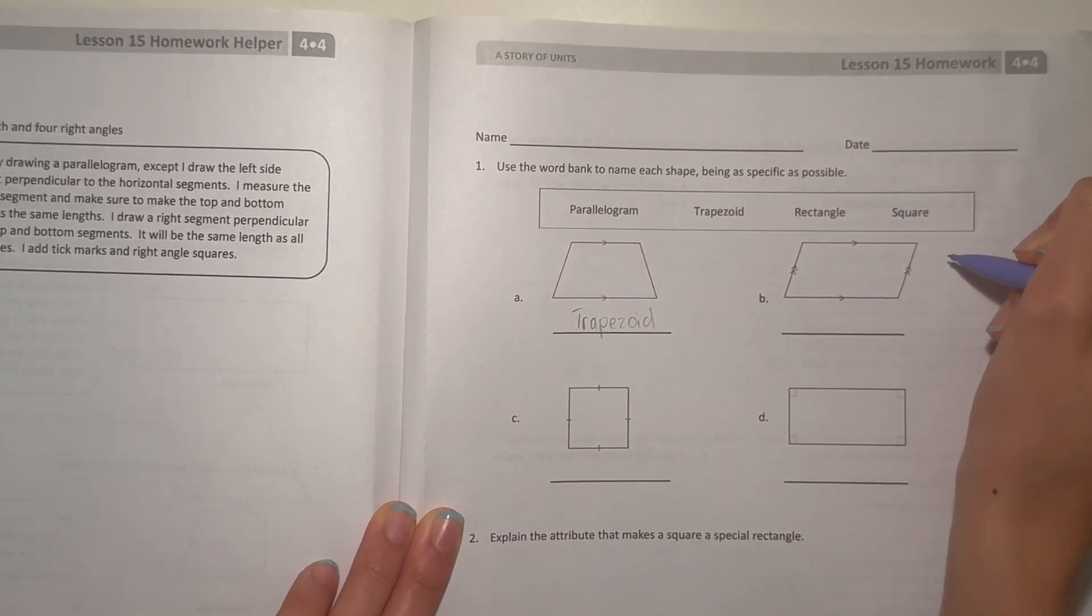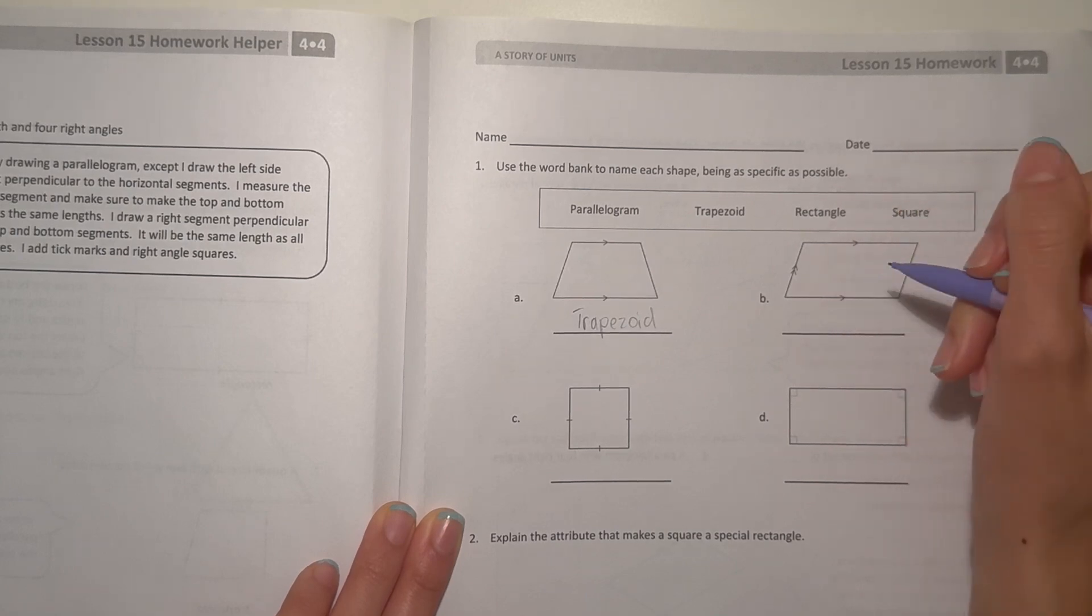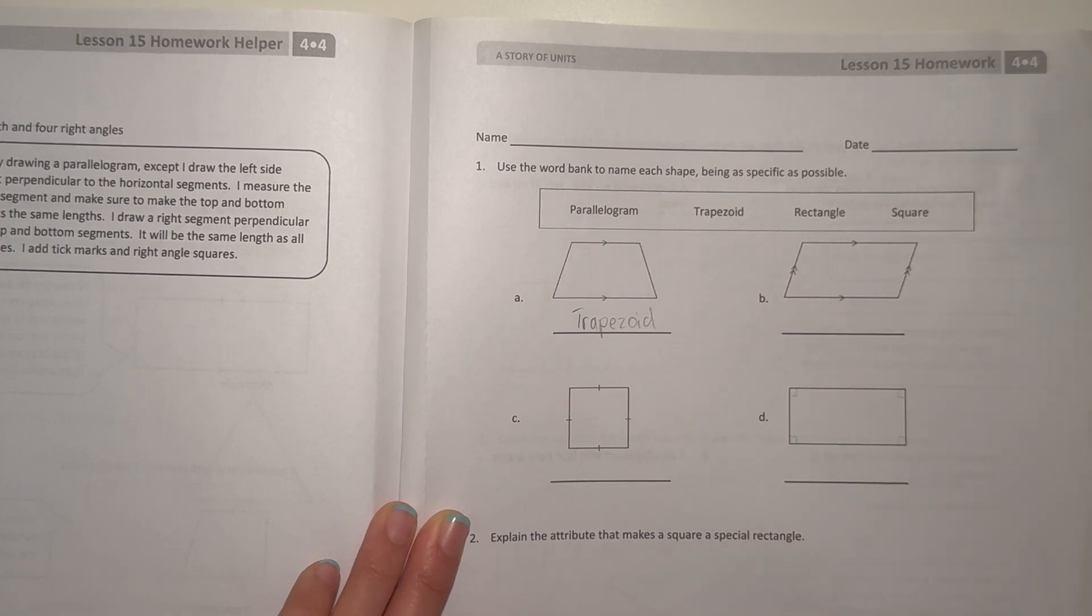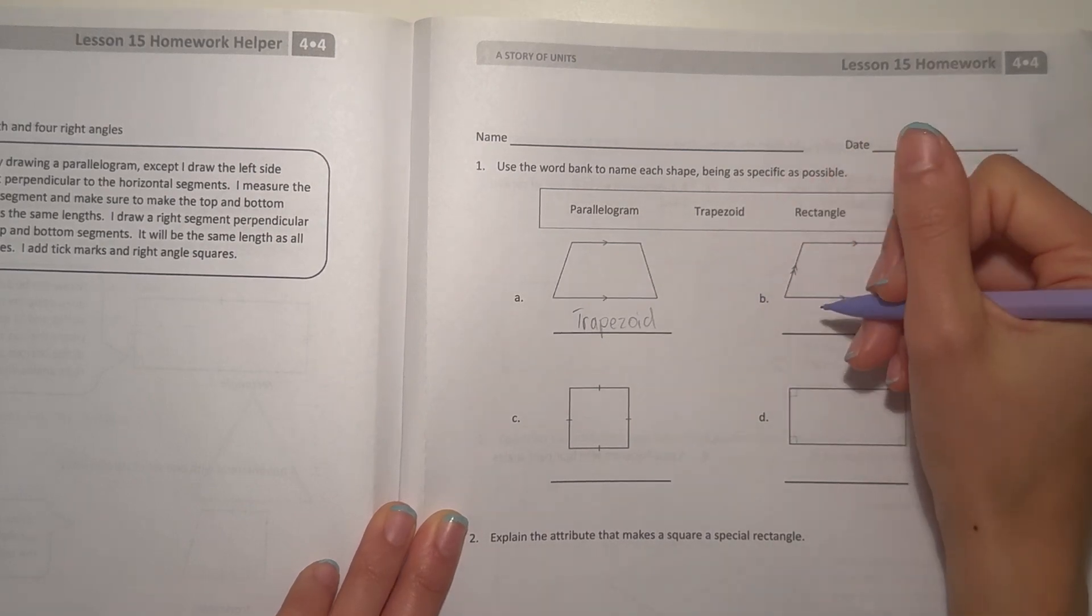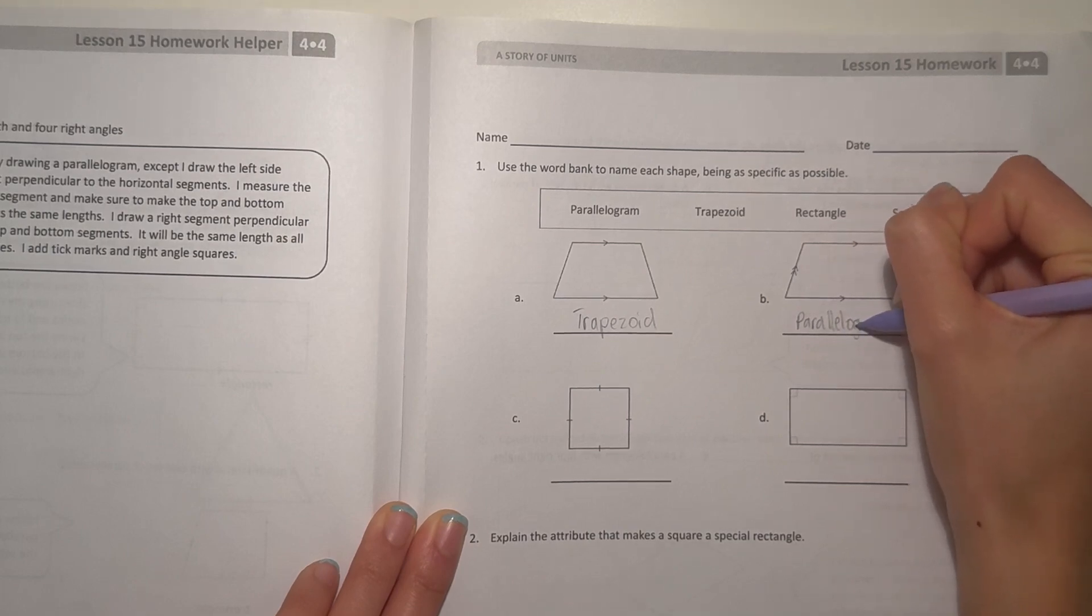And this here is a parallelogram because it has two sets of parallel lines. Again, parallel lines, I like to think of them as train tracks. They both won't touch. So, parallelogram.